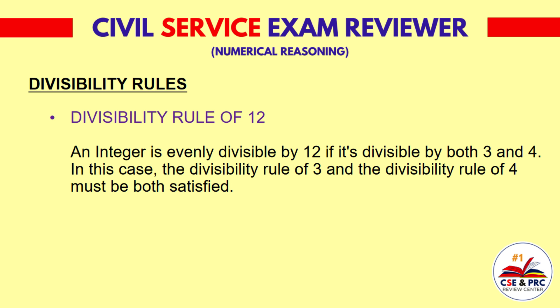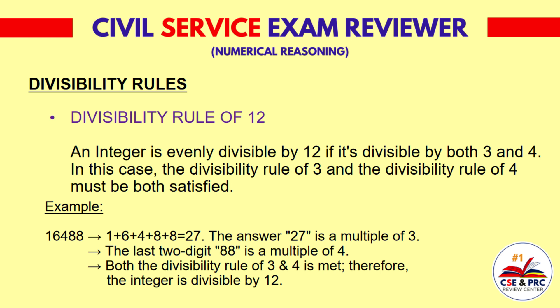Divisibility Rule of 12: An integer is evenly divisible by 12 if it's divisible by both 3 and 4. The divisibility rule of 3 and the divisibility rule of 4 must both be satisfied. Example: 16,488. 1+6+4+8+8 equals 27, which is a multiple of 3. The last two digits 88 are a multiple of 4. Both rules are met, therefore the integer is divisible by 12.